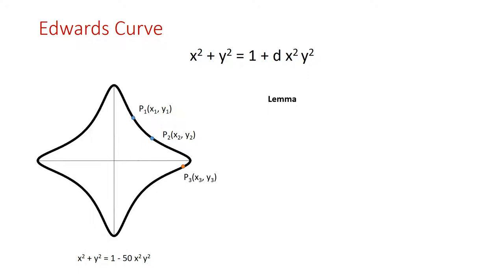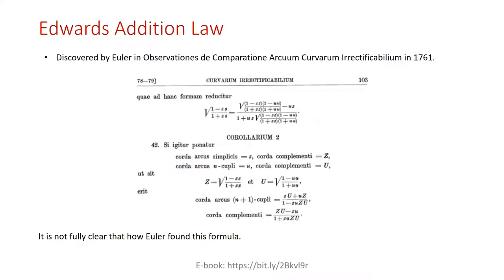The Edwards addition law states that the new point can be found by a specific formula. Notice that the numerators are the same as the unit circle formulas, but they also have denominators. This addition formula was first discovered by Euler in 1761. It can be found in his book, though it's not fully clear how Euler derived this addition formula — it might be based on his observations without a formal proof.